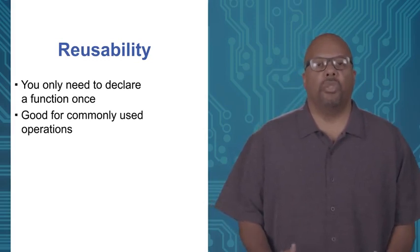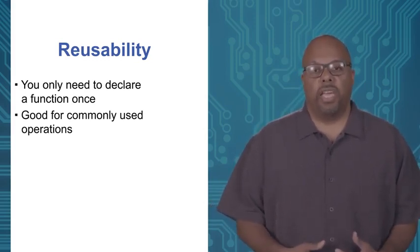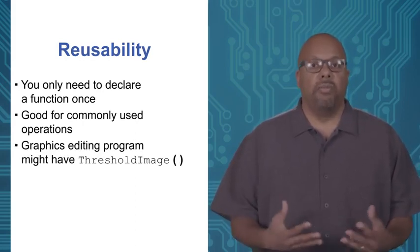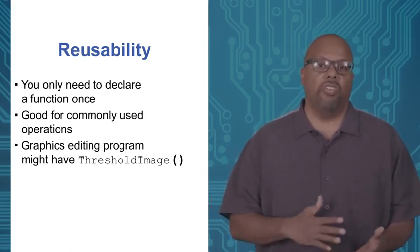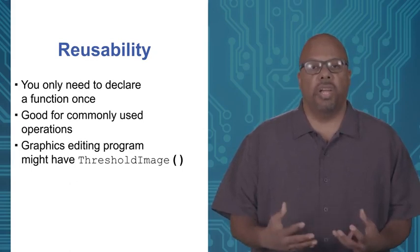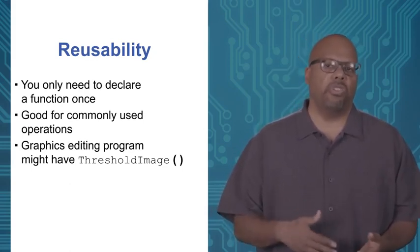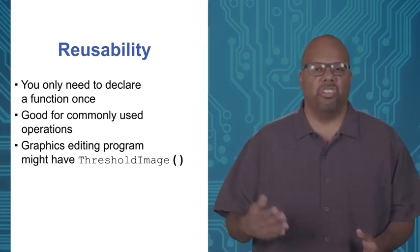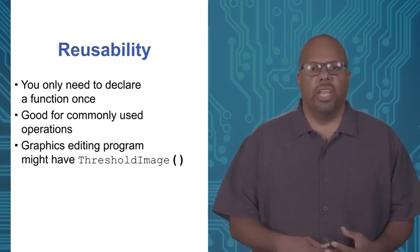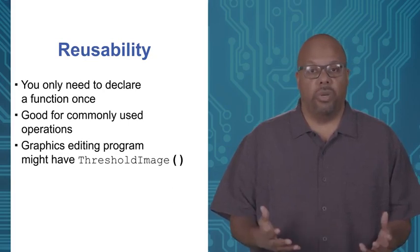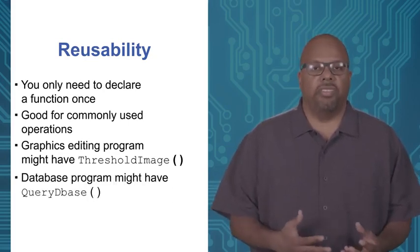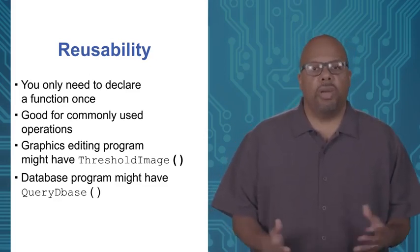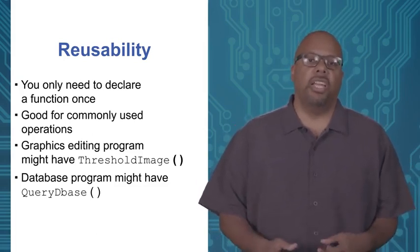As a few examples of functions you might make: say you're writing a graphics editing program, you might have a function called thresholdImage. Thresholding an image — if the brightness is above a threshold you make it black, if it's below you make it white — is a common operation. For a database program, you might have a queryDatabase function, since querying a database is probably the main thing you do. For a music program, changeKey is another example — you do it a lot, so you write it as a function.